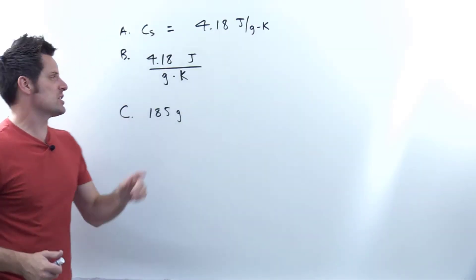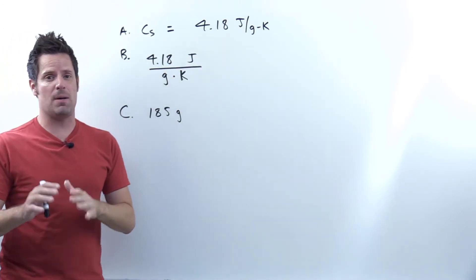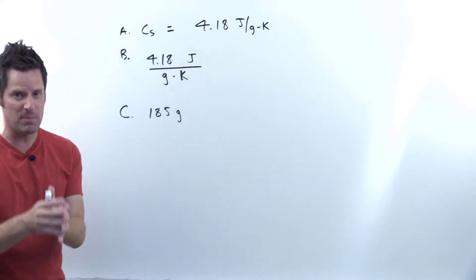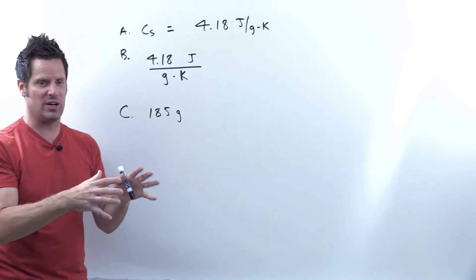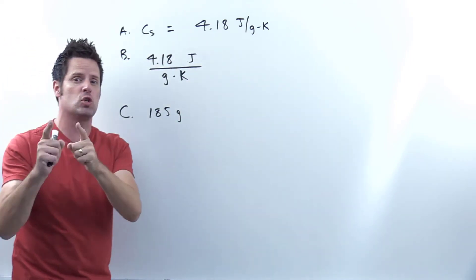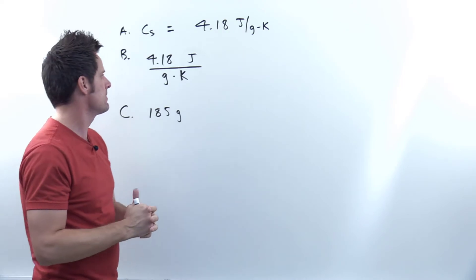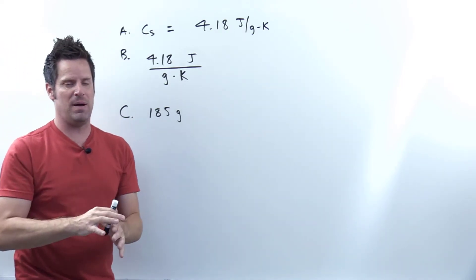Question A asks for the specific heat of liquid water. For that question, you actually just have to look that up on a table. I don't require my university students to memorize that number, but that's the only way you're going to solve it. You look it up on the table or on the internet and just write that answer in. It's this value right here. The units are joules per gram kelvin.